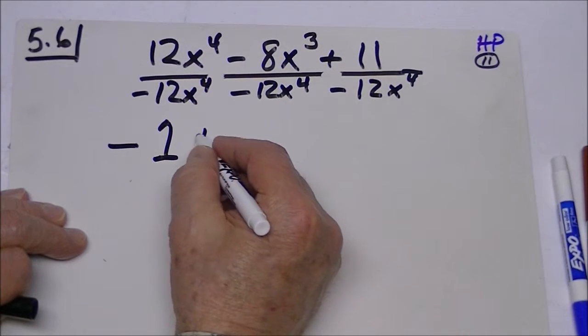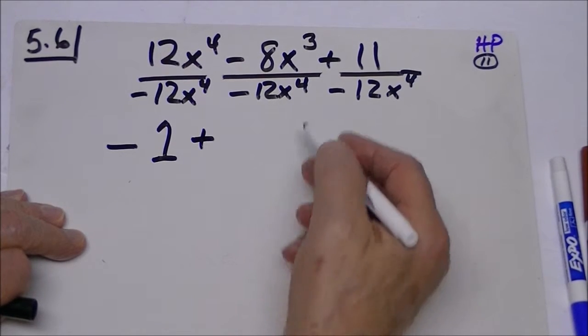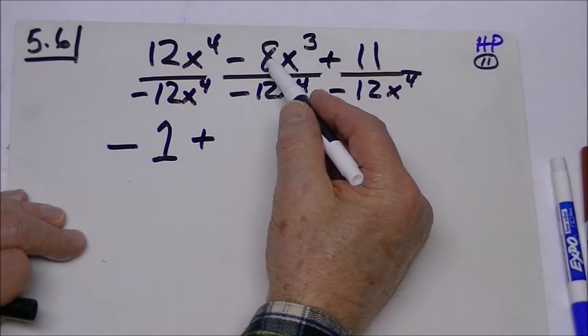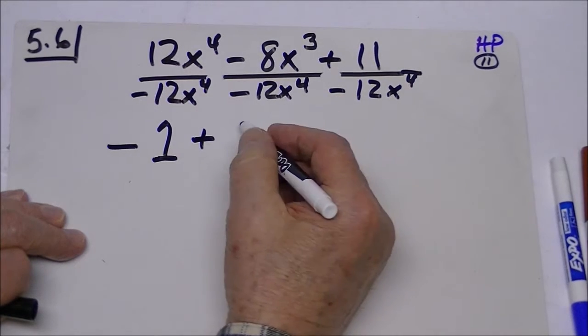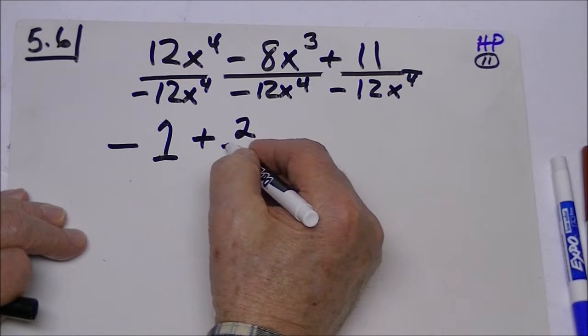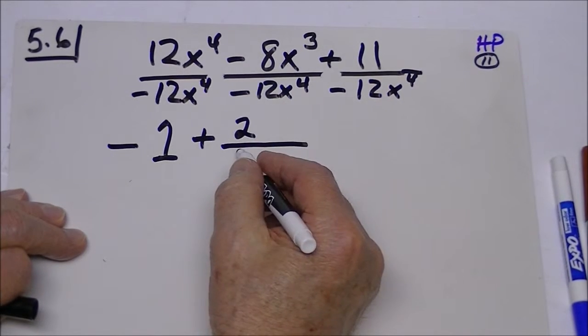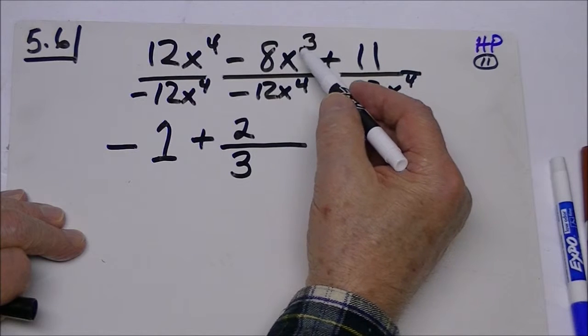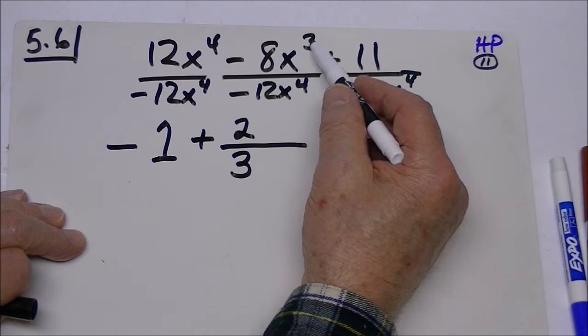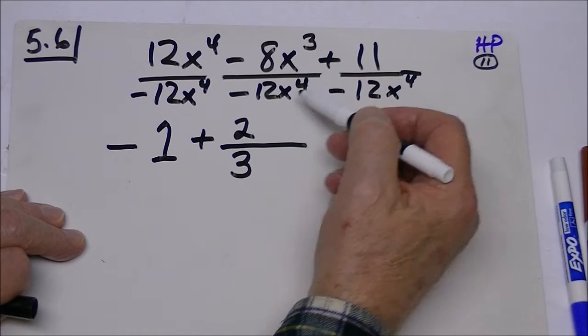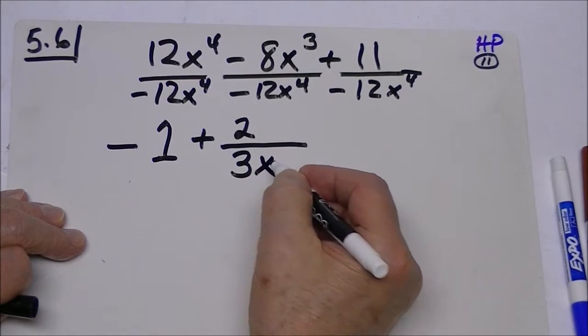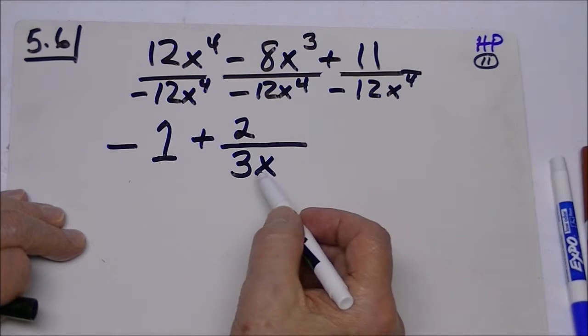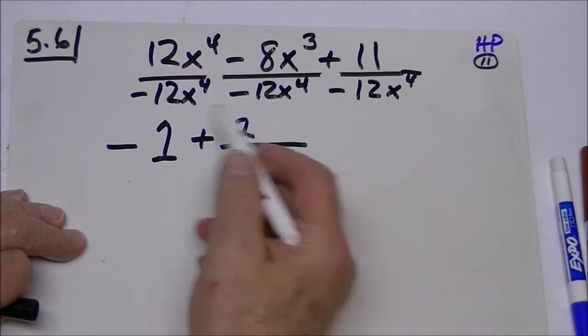You could simplify a little bit: four will go into eight twice, four will go into twelve three times, and when we take the exponent from the top and subtract it from the four, we're left with an X on the bottom.